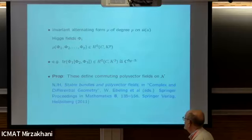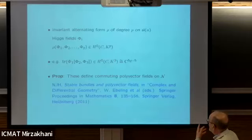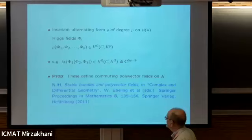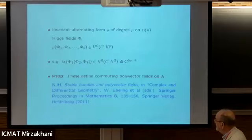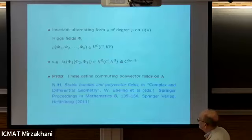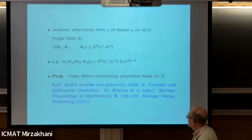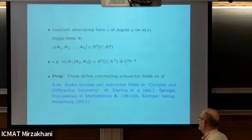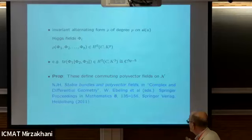If I have an alternating form of degree p on the algebra, I can evaluate it on p Higgs fields and get a holomorphic section of the p-th power of the canonical bundle. The simplest example - and this is of course a universal one - is if we take the Cartan three-form, which up to some multiple in the linear group is trace of phi_1 bracket phi_2 phi_3. This gives us cubic differentials. Just as the even integrable system for rank two gave us quadratic differentials, this gives us cubic differentials.